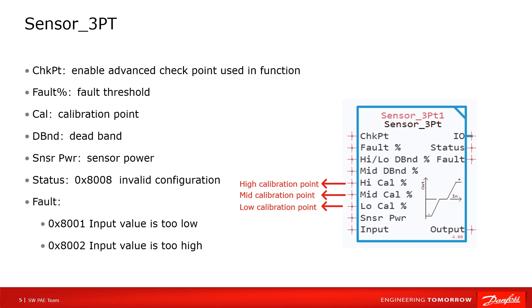Calibration. There are high, middle, and low calibration points. The corresponding output of high calibration point is positive 100%, middle is zero, low is minus 100%.